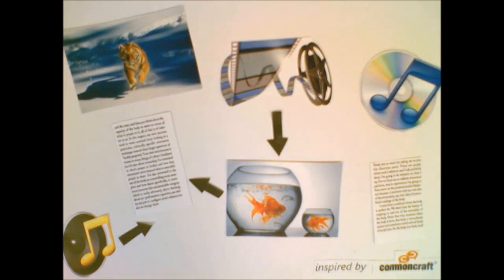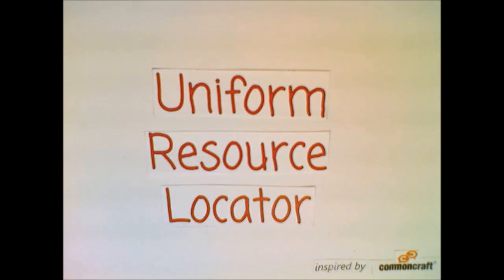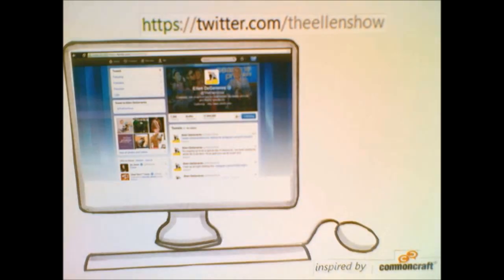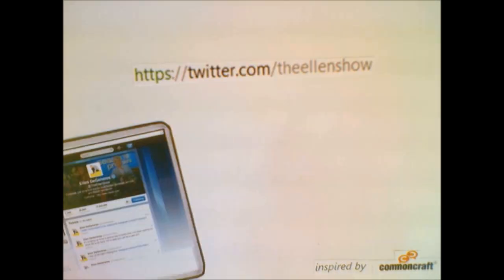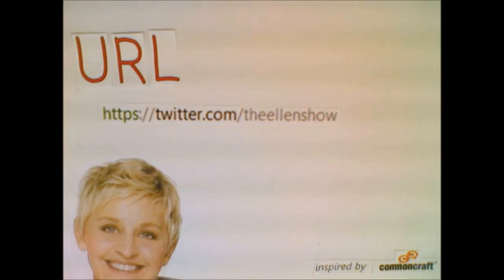Documents can be cross-linked in a way where you can navigate from document to document using hyperlinks. A URL, also known as the Uniform Resource Locator, is the address of the document on the web. URLs have to be completed in exact order to find the file. An example is the URL shown, which will link the user to Ellen DeGeneres' Twitter profile.